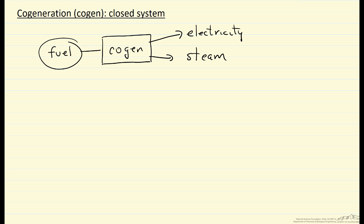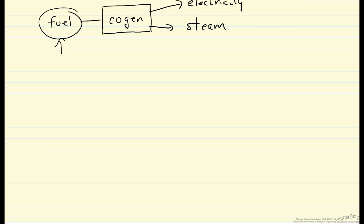We're going to use the steam in some process elsewhere in the plant. This is a closed system, which means the steam stays within the system. The objective is that by generating both electricity and steam, we get a higher efficiency—a larger fraction of this fuel creates useful energy.